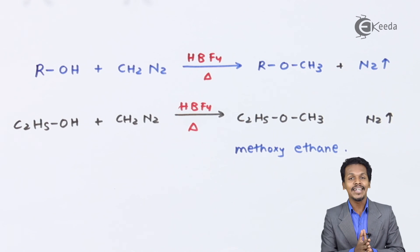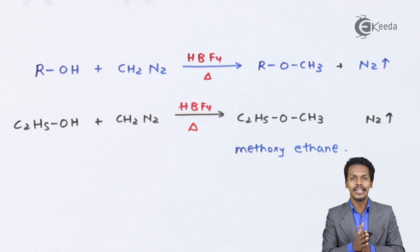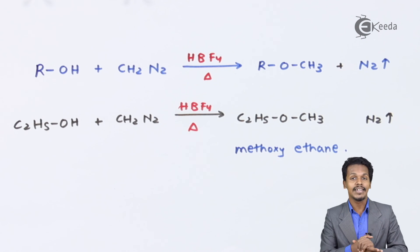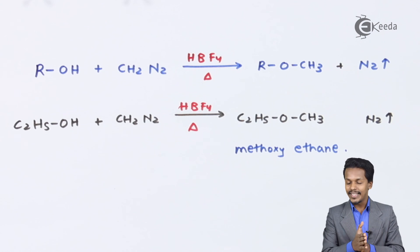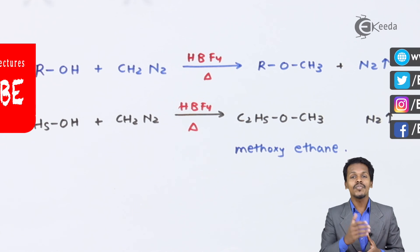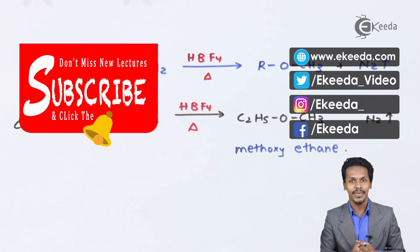These were the two methods to prepare ether from alcohol: treatment with concentrated H₂SO₄ at 413 Kelvin (continuous etherification), and reaction with diazomethane. Thank you for watching. Don't forget to subscribe to the eGraday channel.